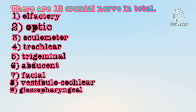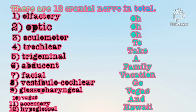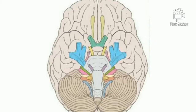Vestibulocochlear, glossopharyngeal, vagus, accessory, hypoglossal. The question is how to learn these — just remember this one sentence: 'Oh, oh, oh, to take a family vacation, go Vegas and Hawaii.' Now we will label the cranial nerves on this diagram.